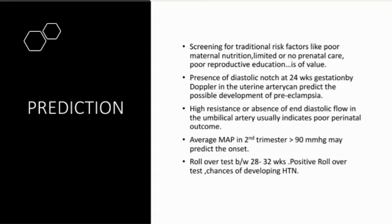The rollover test is done between 28–32 weeks; if positive, chances of developing hypertension are more. The rollover test is blood pressure measurement with the patient on her side first, then the patient is asked to roll on her back to check the blood pressure again. An increase of 20 mmHg in diastolic pressure from side to back position indicates a positive rollover test.